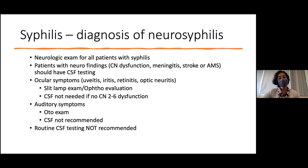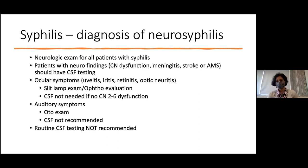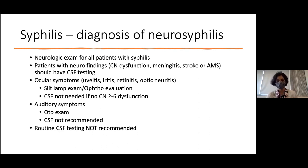When diagnosing syphilis, all patients should receive a neurologic exam. Patients with cranial nerve dysfunction, meningitis, or stroke need CSF testing via LP. Patients with ocular symptoms (uveitis, iritis, retinitis, optic neuritis) need ophthalmologic evaluation with slit-lamp exam but don't necessarily need an LP if there are no focal neurologic findings. Patients with isolated auditory symptoms like tinnitus need an OTO exam but CSF testing is not recommended. Routine CSF testing is not recommended in patients without neurological findings on exam, even though white cells in CSF can occur in syphilis with a normal neuro exam.